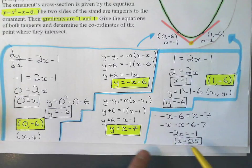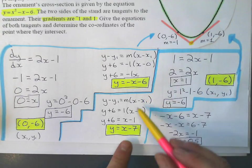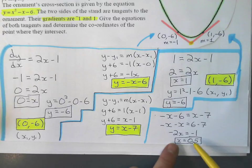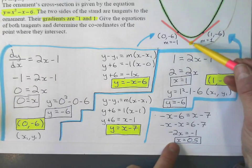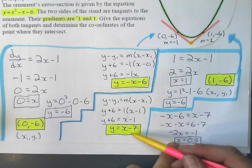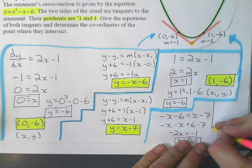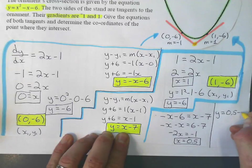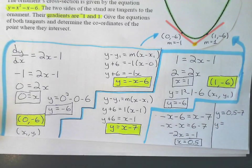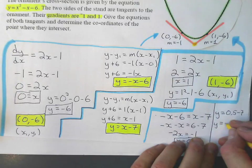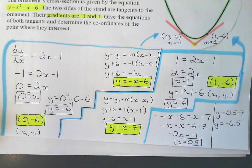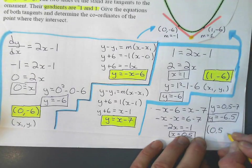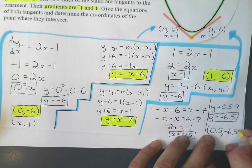Finally, to get the y-coordinate, you substitute it into either one. Whatever's easier. I'd probably use this one because it doesn't have a negative x to find the y-coordinate. Remember, this point is on the line, not on the curve. It's not on the curve. So I don't use that equation. I use the equations of the tangents. So the y-coordinate is going to be 0.5 - 7, which is -6.5. So, finally, my point of intersection of my two tangent lines is (0.5, -6.5).